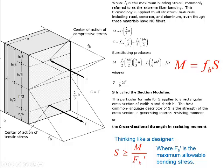This quantity — one-sixth B times H squared — we call the section modulus. This is the section modulus for the specific case of a rectangular cross-section. For any other shape, the section modulus is more complicated to calculate. But we generalize this to: the moment equals F sub B times the section modulus S, for whatever the cross-section might be.